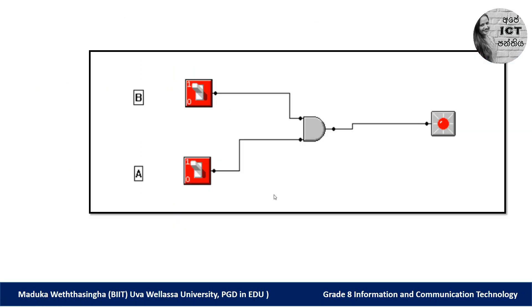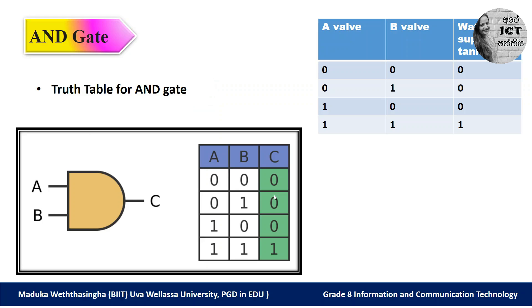In the AND gate truth table, if we input all the values as true — it means if all the values are true — only then our output is true.